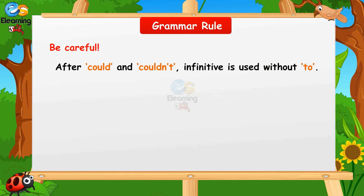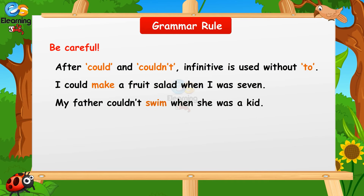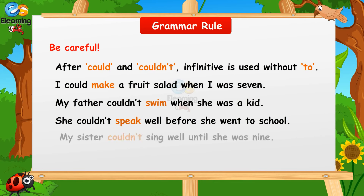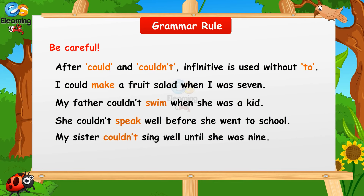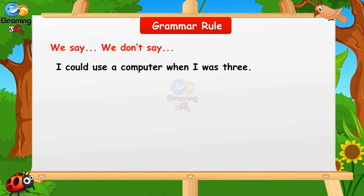Be careful — after could and couldn't, the infinitive is used without 'to'. I could make a fruit salad when I was seven. My father couldn't swim when he was a kid. She couldn't speak well before she went to school. My sister couldn't sing well until she was nine.